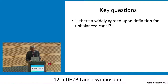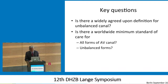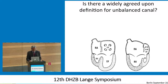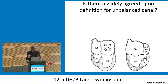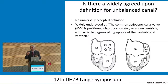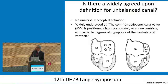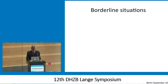So the key question is, is there a widely agreed upon definition? And I'm going to talk a little bit about what should be the standards of care. We all kind of know what AV canal, unbalanced AV canal is. But we can't put that as a clear definition for a global audience. We still can't come up with a clear, simple, three-line definition that can be agreed upon by everybody. It's not easy to define, particularly in borderline situations.